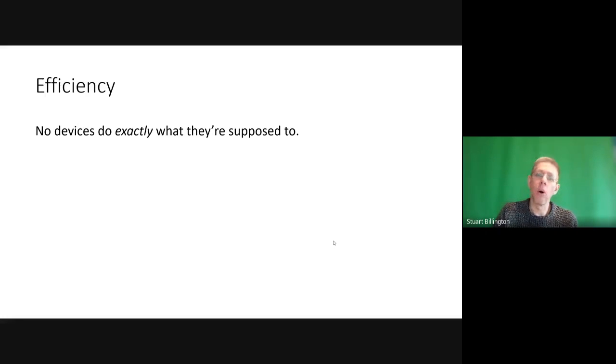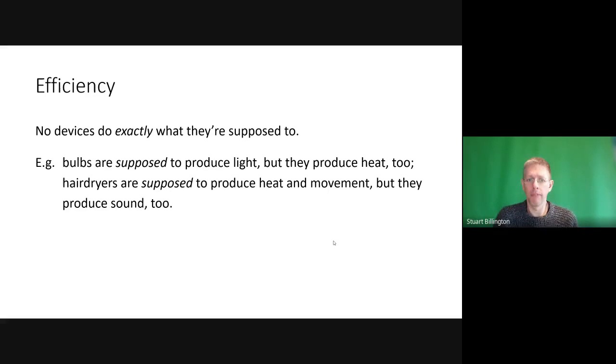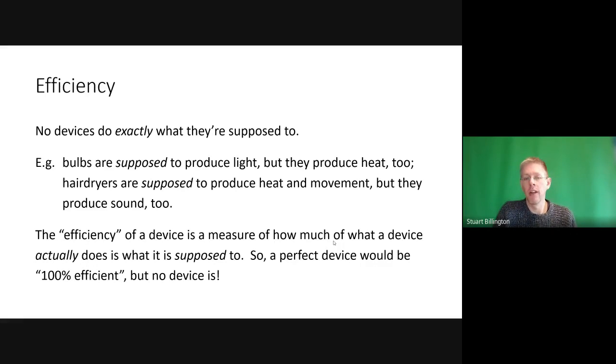Another example: famously, bulbs are one of the most inefficient devices that we've ever manufactured. They are supposed to produce light, but in fact they produce far more heat than they do light, which means that they aren't a hundred percent efficient, they are less than that. If we give them a lump of energy and say to a light bulb I would like some light with this energy please, the light bulb is supposed to turn a hundred percent of that energy into light energy.